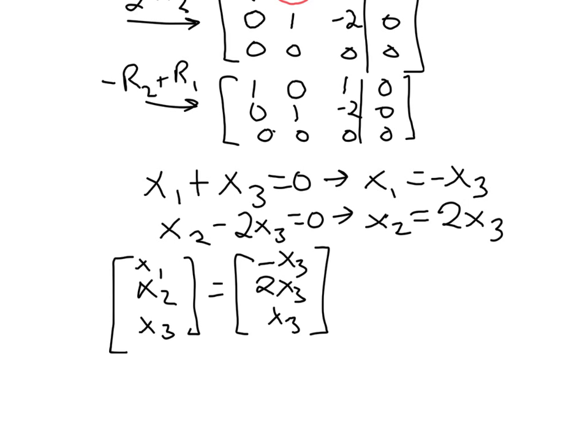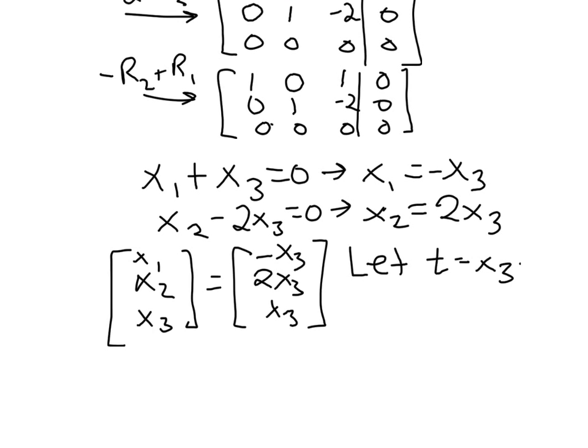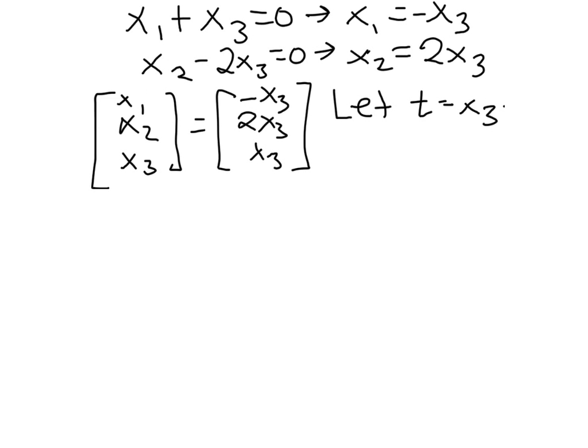So here's where, once you get it in this form, we sometimes introduce a parameter. You don't have to. But since x3 is the free variable, we can let whatever parameter you want to use, I'll use t, equal x3. Then the solution set here can be written as t times negative 1. There's our negative x3. Positive 2, positive 1. Those are just our multiples of x3 where we're replacing x3 with the parameter t. And this is where t is any real number.